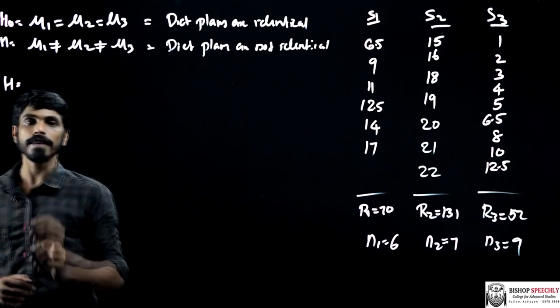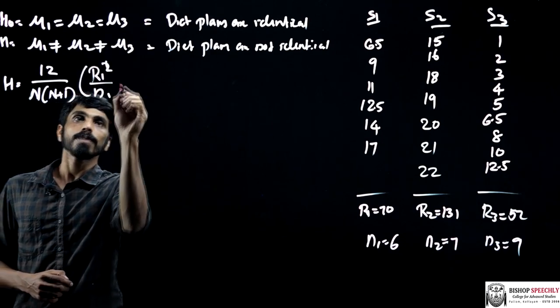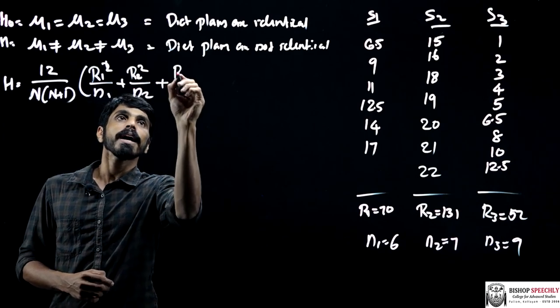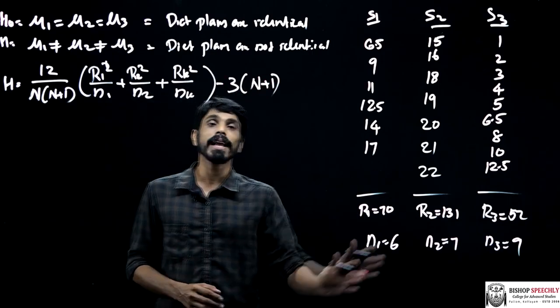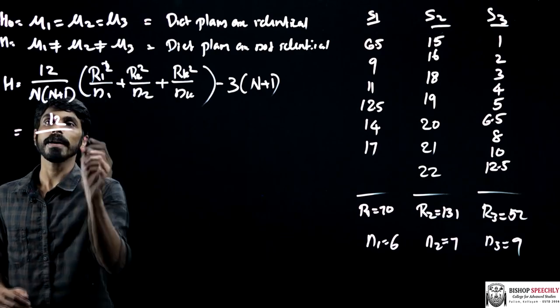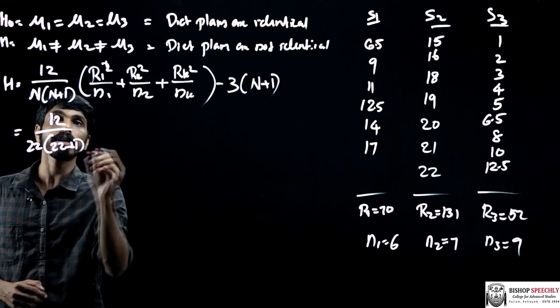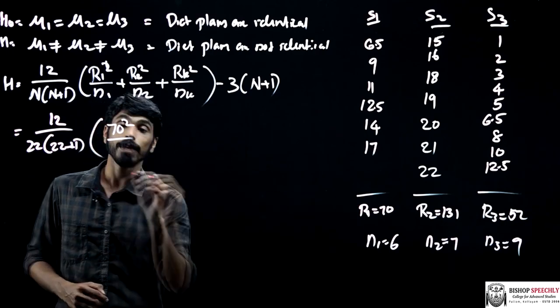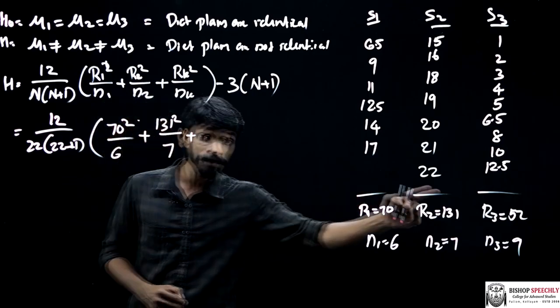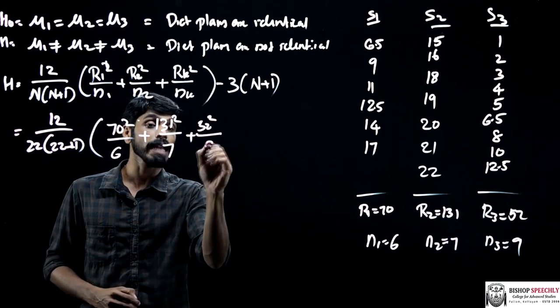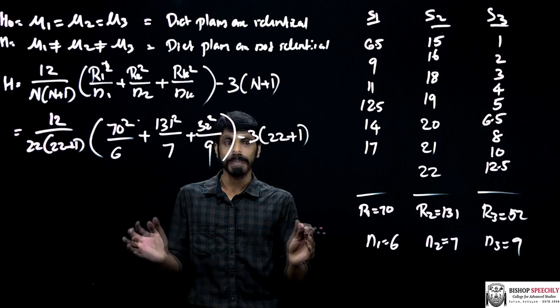In order to test this hypothesis, we have to use the formula of Kruskal-Wallis: H equals 12 divided by N(N+1) times (R1²/N1 + R2²/N2 + Rk²/Nk) minus 3(N+1). Let's apply these values into this equation. We will get 12 divided by 22 times 23, then (70²/6 + 131²/7 + 52²/9) minus 3 times 23. This is the way we are going to solve this problem.